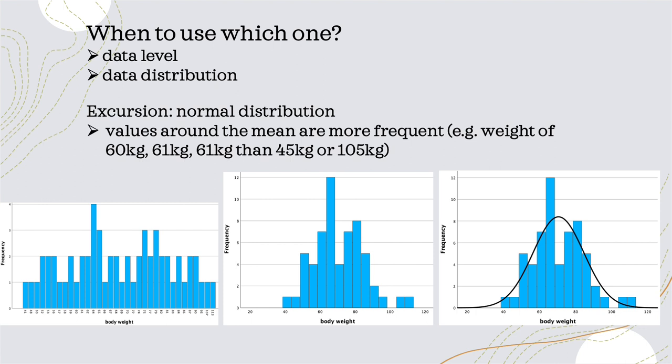For example, our mean was somewhere around here from the previous picture, so it is more likely we have many people with values around 60, 61, or 62 than people with a body weight of 45 or 105. We can see this when we group into little intervals in the histogram.